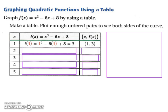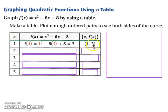Let's look at an example. We're going to graph a quadratic function using a table. Our function is f of x equals x squared minus 6x plus 8. We have some arbitrary values for x: 1, 2, 3, 4, and 5, and we're going to input them into our function to get an output. For example, when 1 is our input, we have 1 squared minus 6 times 1 plus 8 equals 3, so the coordinate we'd plot is (1, 3).